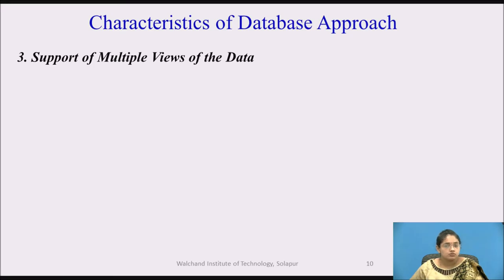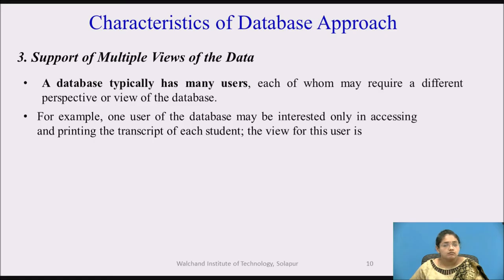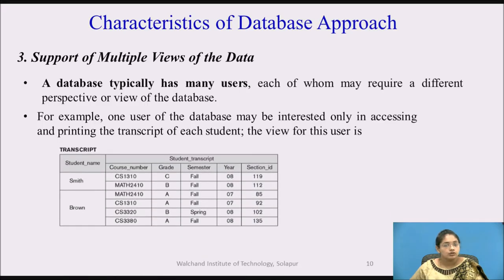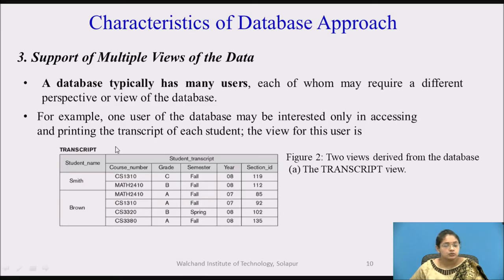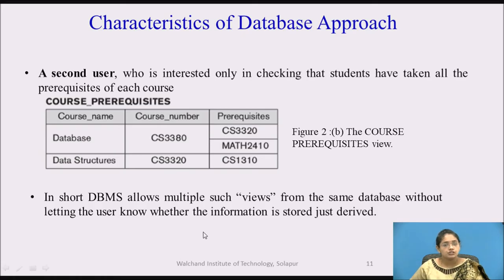Next is support of multiple views of data. A database typically has many users, each of whom may require a different perception or view of the database. For example, one user may be interested only in accessing and printing the transcript of each student — that is the view for that user. Whereas a second user may be interested only in checking that a student has taken all the prerequisites of each course — that is the view of course prerequisites. DBMS allows multiple such views from the same database without letting the user know whether the information is stored or derived.